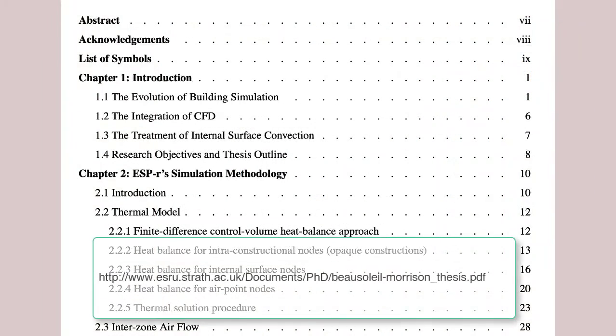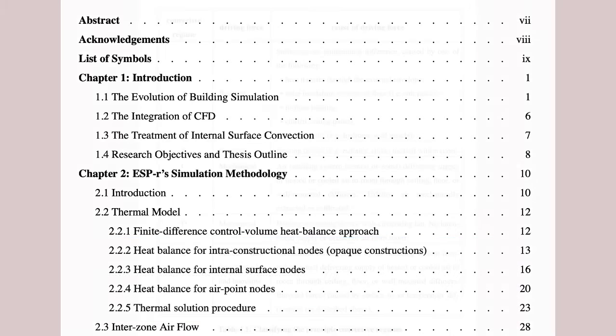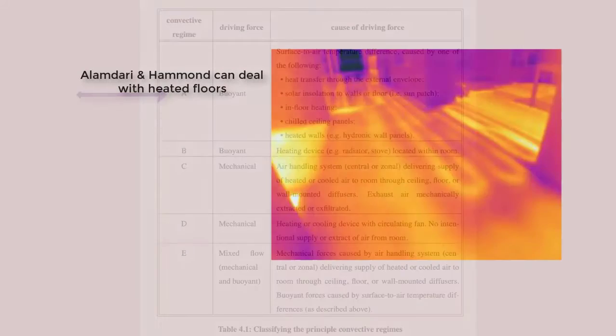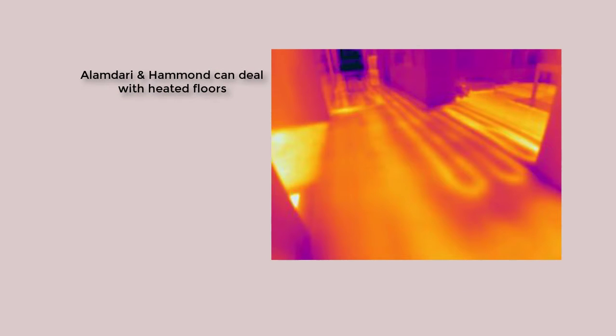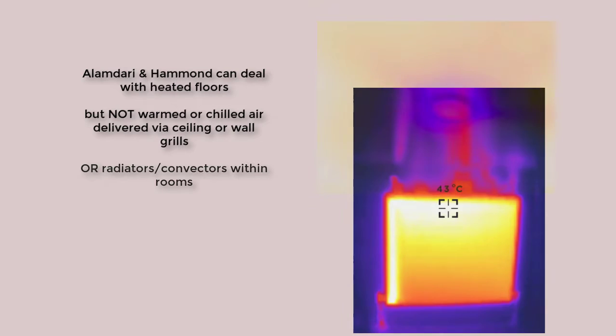According to Ian Beausoleil-Morrison's thesis, our choices about heat transfer can have significant impacts across a range of performance metrics. For example, ANH is applicable if the temperature difference between the surface and the air is because of conduction through the facade, or a sun patch, or some embedded heating or cooling device. In those cases, it has a well-founded method for deriving heat transfer with the adjacent air.